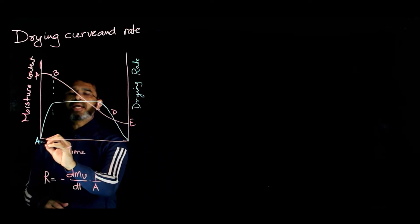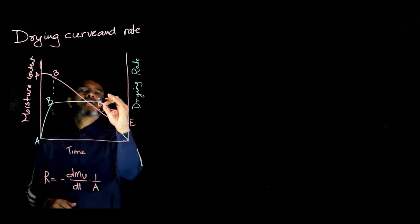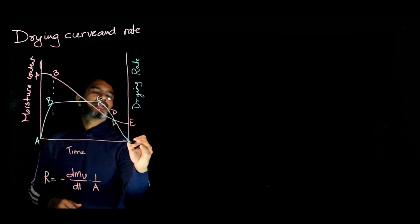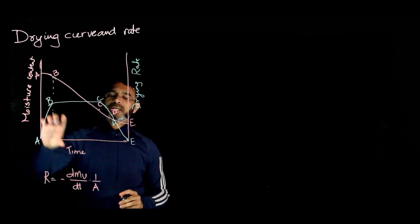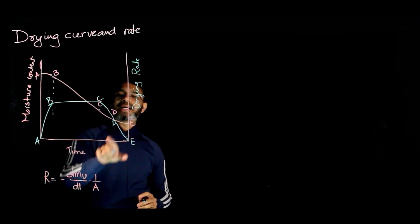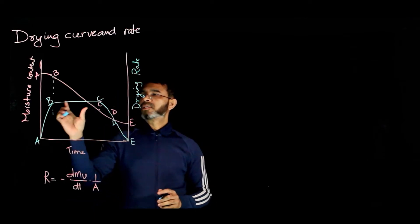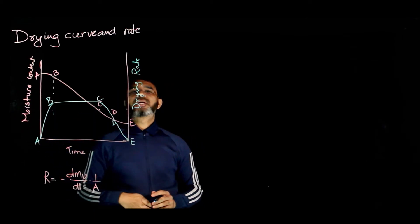So these are points A, B, C, D, and E. This is the curve between moisture content and time, and also the drying rate versus time. If you plot drying rate versus moisture content, how does it look?